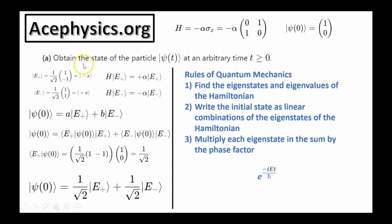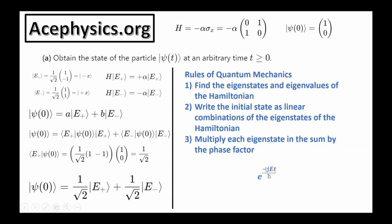Now let's solve the problem. Part A says: obtain the state of the particle psi as a function of time for any arbitrary time t greater than or equal to zero. The rules of quantum mechanics are as follows: one, find the eigenstates and eigenvalues of the Hamiltonian; two, write the initial state vector as a linear combination of eigenstates of the Hamiltonian; three, multiply each eigenstate in the sum by the phase factor e to the minus iEt over h-bar, where E is the energy corresponding to the given eigenstate. These are the fundamental rules of quantum mechanics established through the scientific method — observation, hypothesis, experimentation, and analysis.